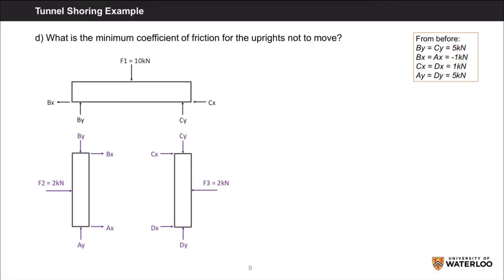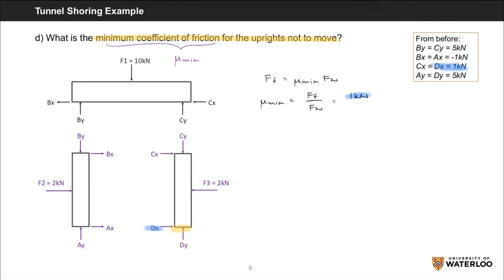Part D asks for the minimum coefficient of friction for the uprights not to move. The coefficient of friction μ satisfies: force of friction equals μ times the normal force. Rearranging: minimum μ equals friction force over normal force. Using the reactions at the base of the upright, minimum μ equals 1 kN (horizontal reaction) divided by 5 kN (vertical reaction), giving a minimum coefficient of friction of 0.2.